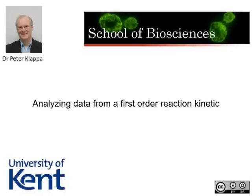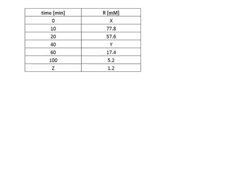Now let's assume we have this set of data. We have on one hand the time and we have a reactant, and we already know that it should follow first-order reaction kinetics. What we want to do in this case is calculate these missing numbers x, y, and z, and in the following, this is how you do it.